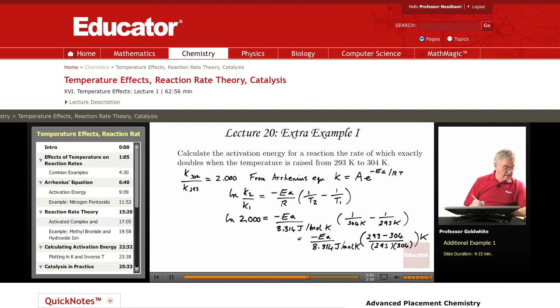Carrying through that calculation, Ea then becomes 4.67 times 10 to the fourth Js per mole, or 46.7 KJs per mole.